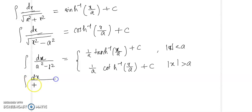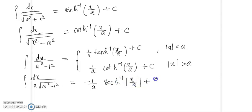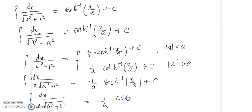The integral of du / (a² − x²) using coth⁻¹ applies when |x| > a. The integral of dx / (x · root(a² + x²)) = −(1/a) sech⁻¹(x/a) + C. These are the formulas for integrals whose values are expressed as inverse hyperbolic functions.